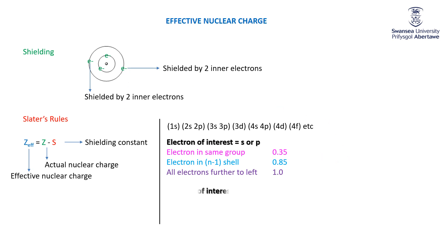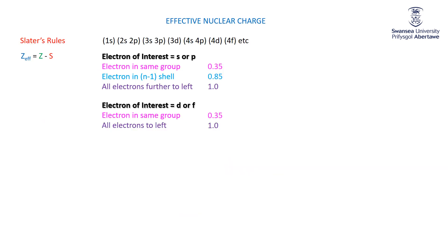If the electron of interest is in a D (or F, though we won't cover F today), the rules are much simpler. If it's in the same group — meaning the same subshell for D electrons — there is a 0.35 shielding effect. But everything closer to the nucleus has a full one-electron shielding effect of 1.00.